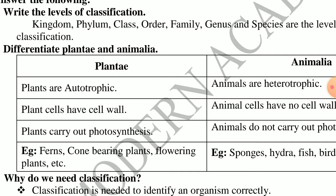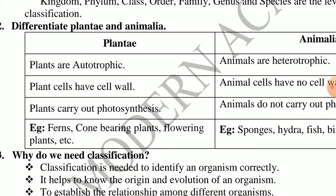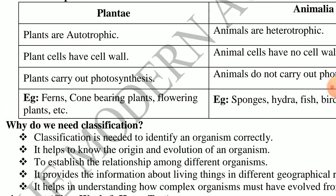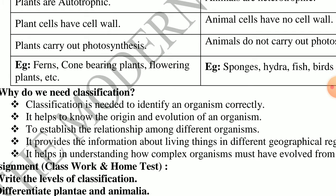Third question: differentiate Plantae and Animalia. Plantae means plants; Animalia means animals. Plants are autotrophic; animals are heterotrophic. Plant cells have a cell wall; animal cells have no cell wall. Plants carry out photosynthesis; animals do not. That means plants prepare their own food, but animals depend on other plants or animals for their food.